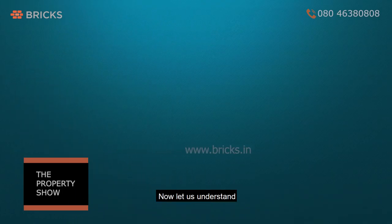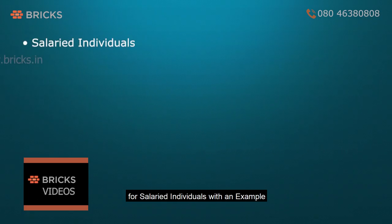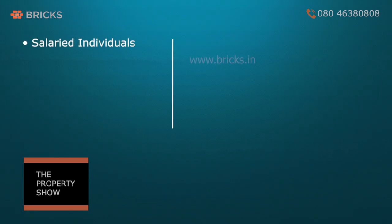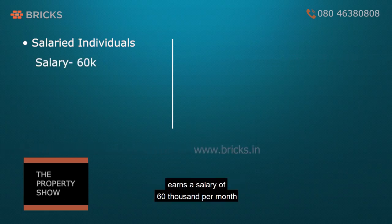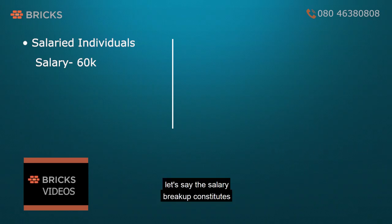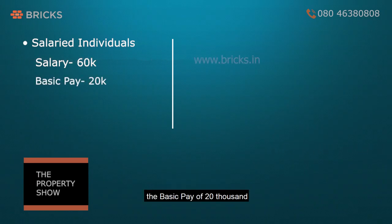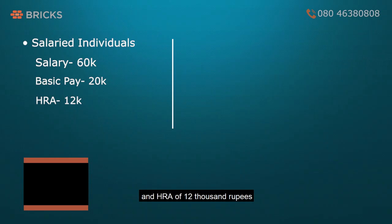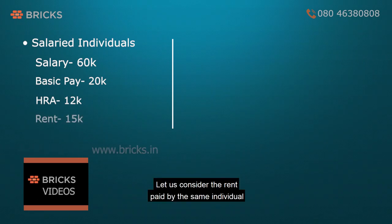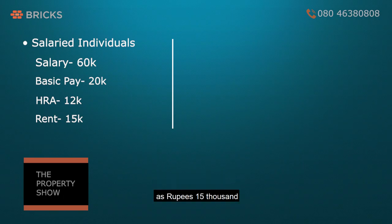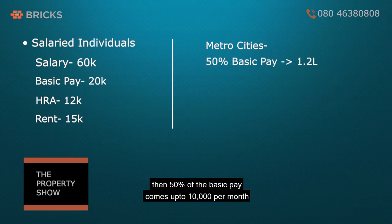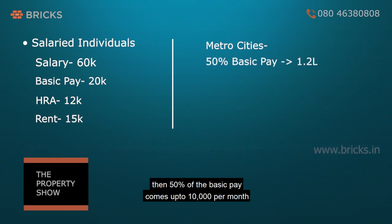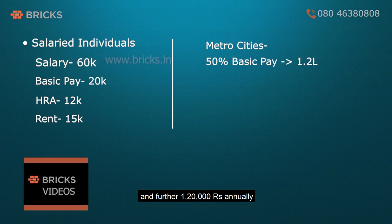Now let us understand HRA tax exemption for salaried individuals with an example. An individual working for a private sector firm earns a salary of ₹60,000 per month. The salary breakup constitutes a basic pay of ₹20,000 and HRA of ₹12,000. The rent paid is ₹15,000. If the individual resides in a metro city, 50% of basic pay comes to ₹10,000 per month, or ₹1,20,000 annually.